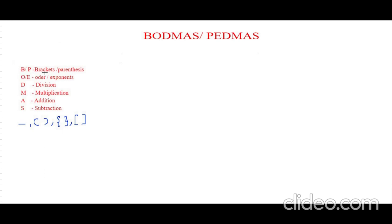B and P, that is brackets or parenthesis. O and E, which is order and exponents. D is division, M is multiplication, A is addition, and S is subtraction. So we are going to follow this order to solve the question.